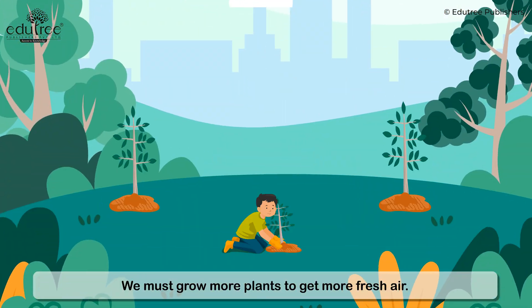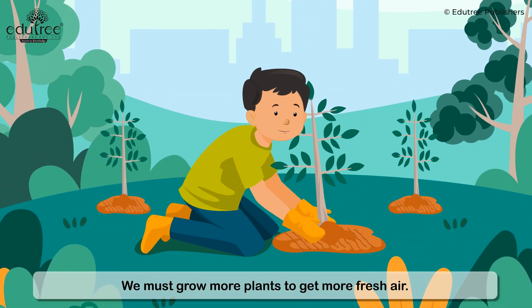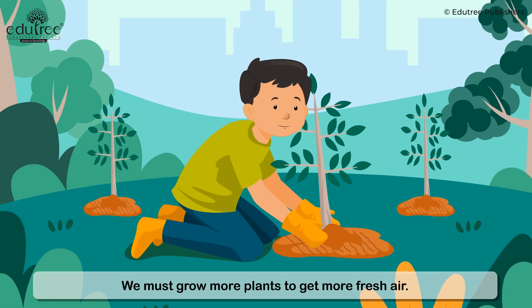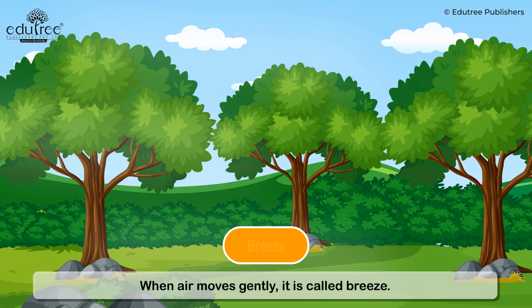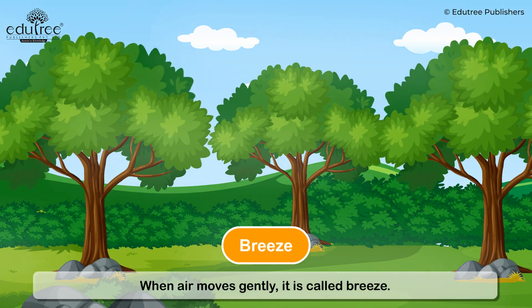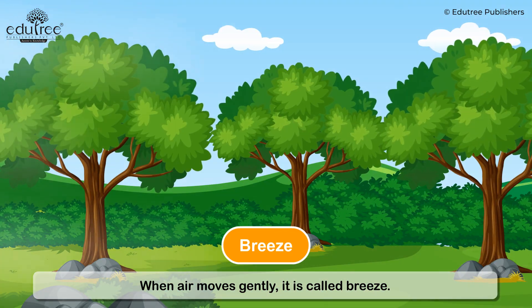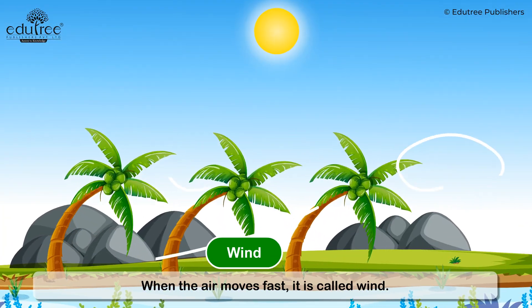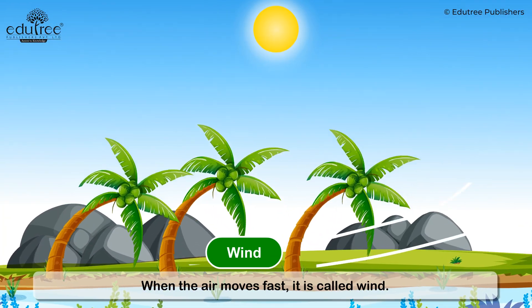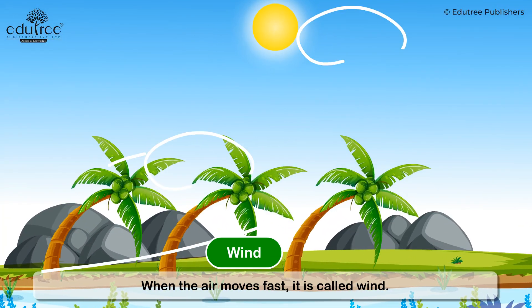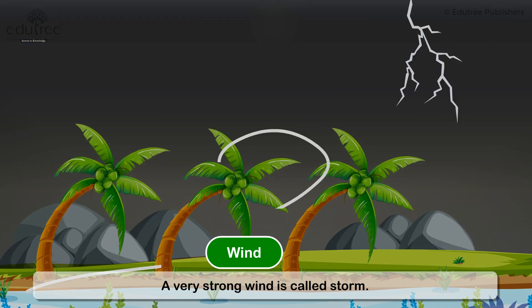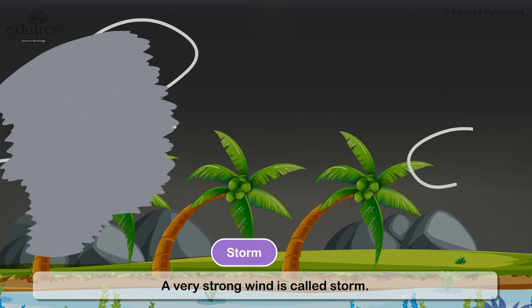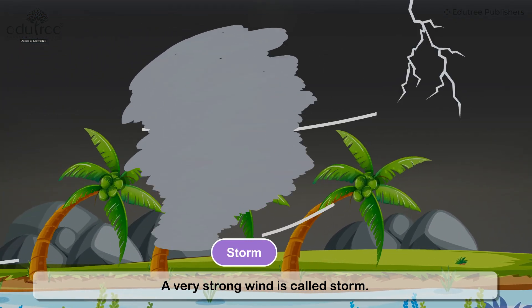We must grow more plants to get more fresh air. When air moves gently, it is called breeze. When the air moves fast, it is called wind. A very strong wind is called storm.